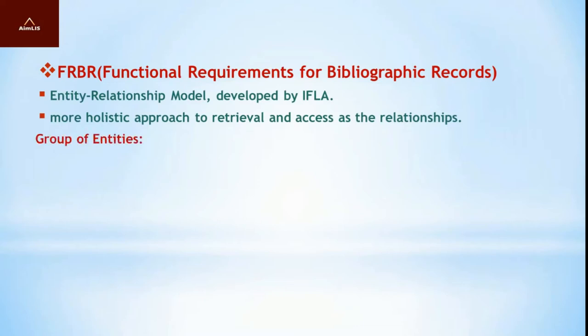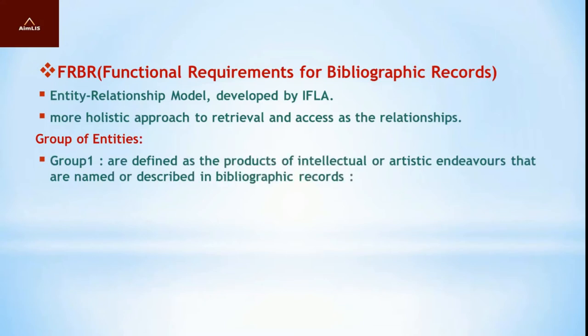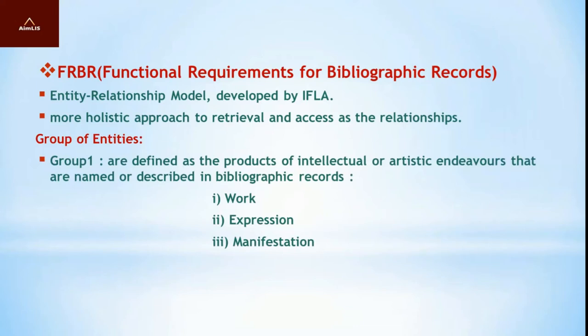FRBR comprises groups of entities. Group 1 entities are defined as the products of intellectual or artistic endeavours named or described in bibliographic records. These include: Work — a distinct intellectual or artistic creation; Expression — the specific intellectual or artistic form a work takes each time it is realized; Manifestation — the physical embodiment of an expression of a work; and Item — a single exemplar of a manifestation, which is a concrete entity.